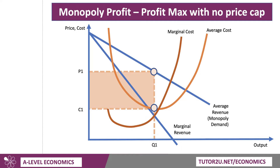So here's our diagram. If you followed from the previous video on monopoly, this diagram shows profit maximisation without a price cap. A monopoly can charge price P1, the profit-maximising output is Q1, and they make a really good profit, shown by the shaded area.